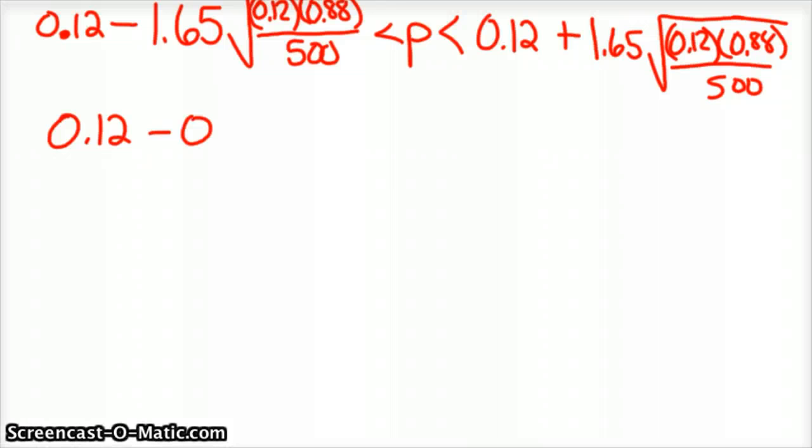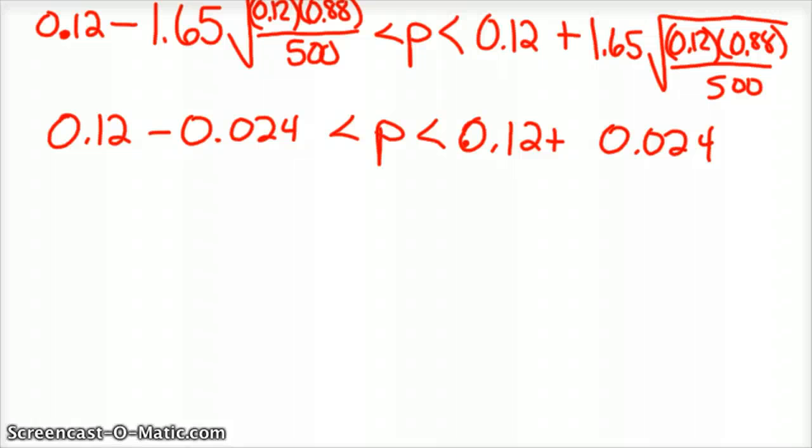And so what we'd end up with is 0.12 minus, and we do all the calculations, 0.024 is what that rounds to. 024 is less than P, is less than 0.12 plus 0.024.